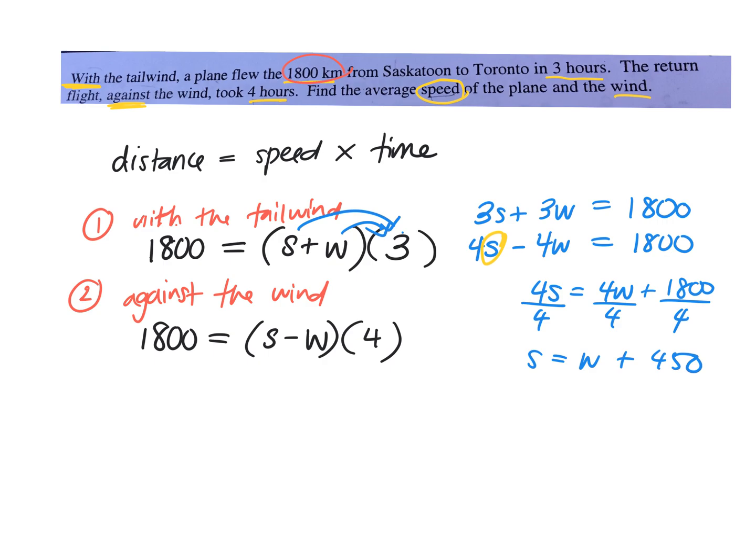Now this is a good choice because this is very simple to plug into your first equation. So we're going to plug that in where we see s in the first equation. This was our first equation here, and this was our second equation. So in our first equation, we're now going to have 3 times the value of s, which is what? The value of s. W plus 450. 450, and then plus 3w equals 1,800.